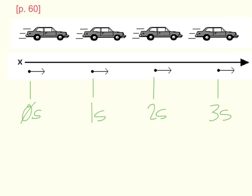Remember that a motion map shows where an object is at each moment in time. In this situation, a car started at the zero position at zero seconds, and it moved to the right for three seconds.